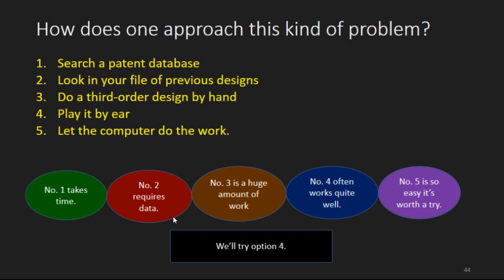Now how do you approach a problem like that? I can identify five different ways that you might do it. You can go and search a patent database, which takes a whole lot of time. You can look in your own files or previous designs. If you have one that's pretty close, you're all set. If you don't have one, you're out of luck. You can do a third-order design by hand, and some people still like to do that. But that's a huge amount of work. You can play it by ear. That's kind of fun to do sometimes. Or you can let the computer do the work, and I really like that last one.